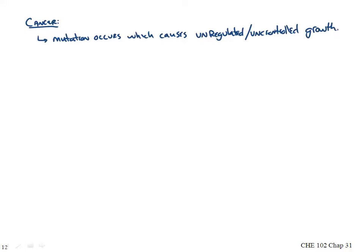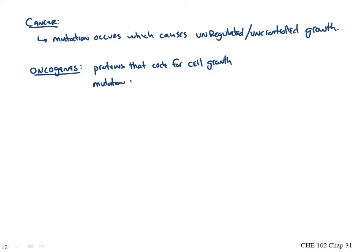Everyone probably has that basic definition. We can add a bunch of words to go one level of detail deeper, but beyond that you have to start getting into the nitty-gritty. So let's start with some words we need to know. Oncogenes are actually genes that protect you — they're proteins that code for cell growth. If a mutation occurs in the DNA, it causes the oncogenes to misfunction.